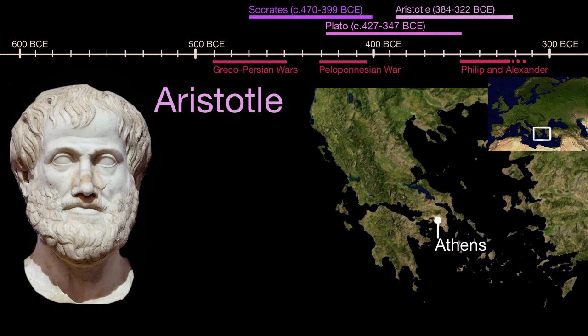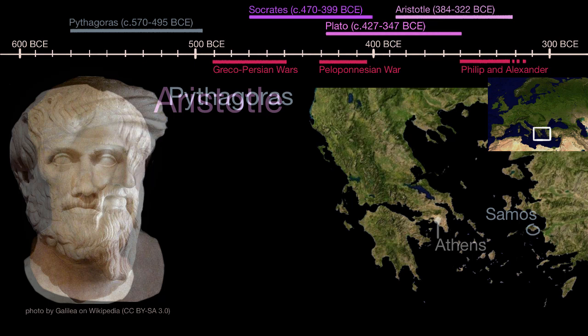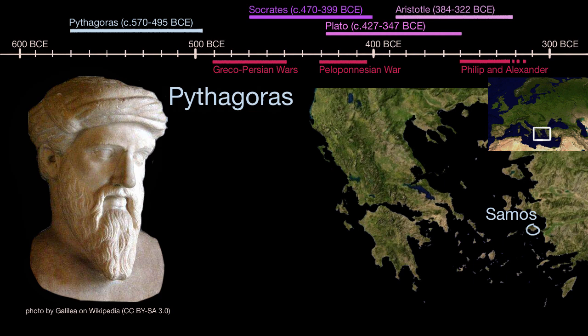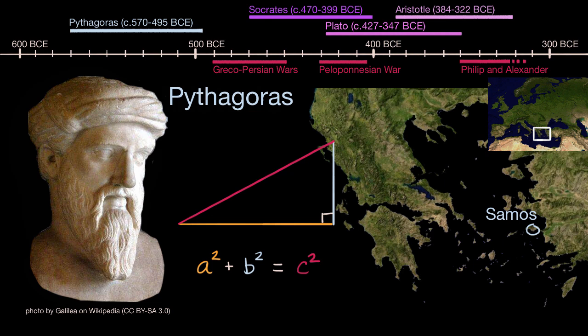There are also significant contributions in mathematics. You have Pythagoras, who actually predates these philosophers, and he's most famous for his Pythagorean theorem and a lot of mathematics and the foundations of geometry. But he and his followers were actually creating something of a mysticism, a religion around mathematics, and even a philosophy that would later influence other philosophers — especially this idea of ideal Platonic forms.